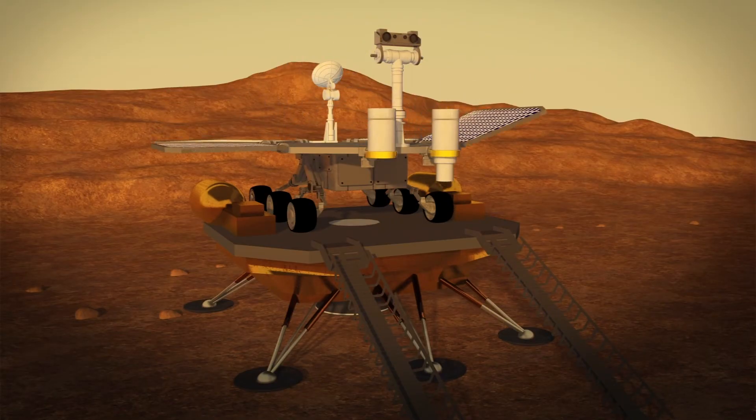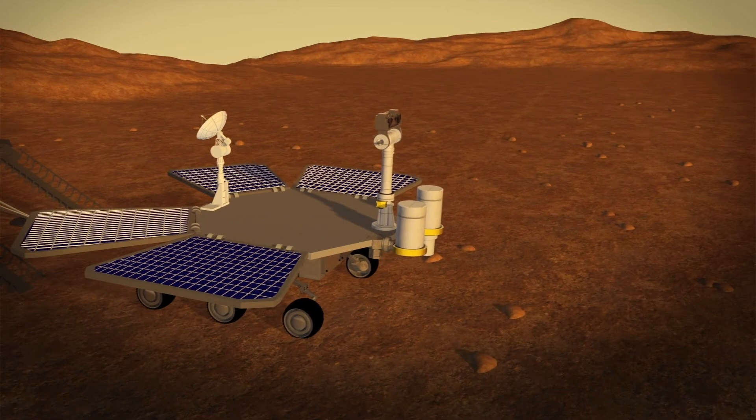The lander will contain a rover with six wheels and four solar panels and will explore Mars.